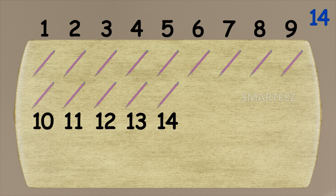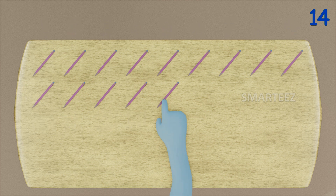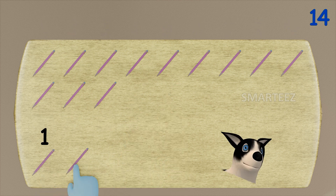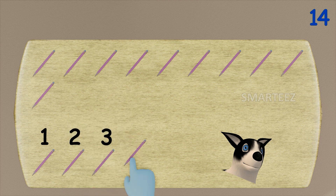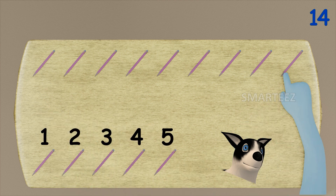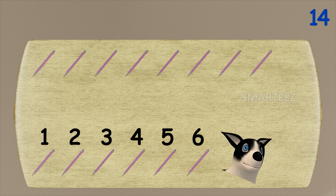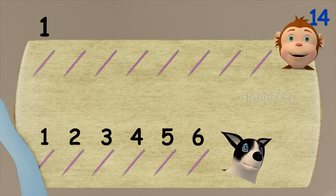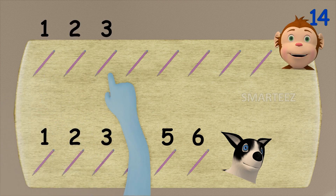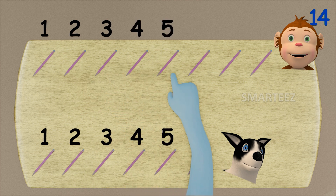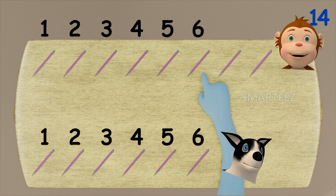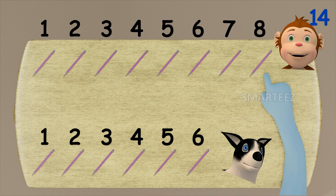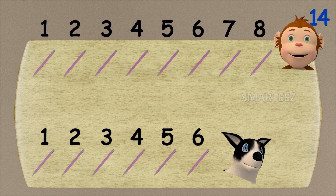I'm going to give six pencils to Byra. That's one, two, three, four, five, and six. Okay, let's see how many are left for Rangu. That's one, two, three, four, five, six, seven, and eight. When we give six pencils to Byra after fourteen, we have eight pencils left for Rangu.